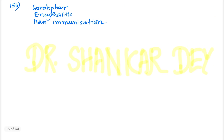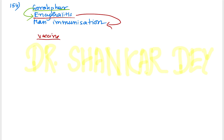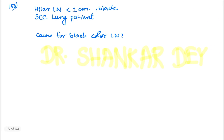Question 154: Following an acute encephalitis syndrome outbreak in Gorakhpur, the public health officer started mass immunization. The type of vaccine given is Japanese Encephalitis vaccine — a live vaccine given subcutaneously.